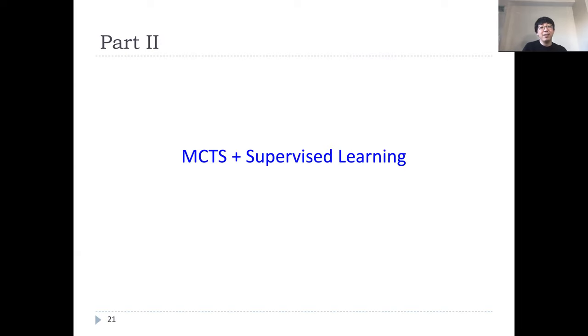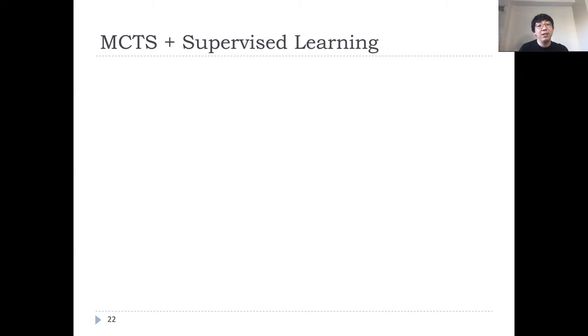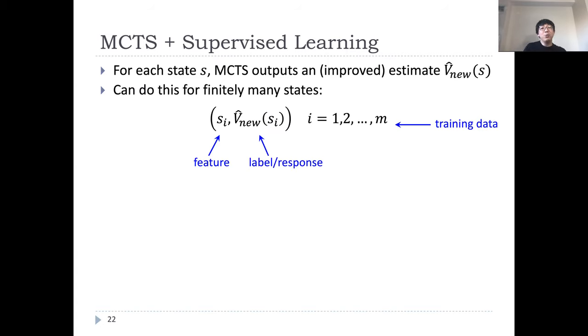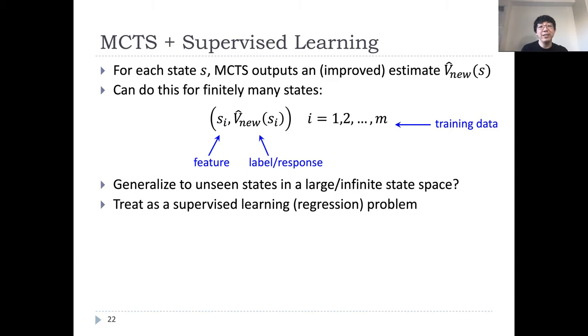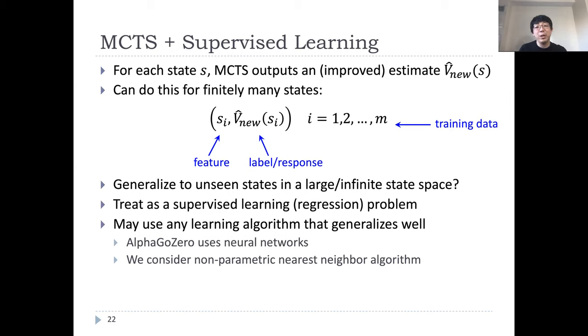Now that we have guarantees for MCTS, we can study how it performs when combined with supervised learning. Recall that for each state S, we have shown that we can query MCTS to obtain improved estimates. With this, of course, we can repeat for finitely many states, which leads to a training data with a sampled state being the features and an output from MCTS being a response. Since we only do this for finitely many states, we need to generalize to unseen states in a continuous space. However, this is easy. With the training data, we can treat this as a supervised learning task.